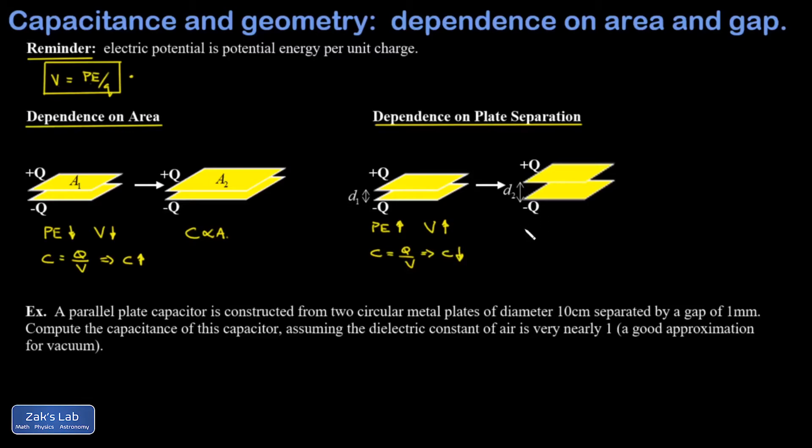And again nature behaves in this very simple way where it's actually an inverse proportionality. As d gets bigger, C gets smaller, but it's a perfect proportionality. So if d doubles, the capacitance would be cut in half. So what's the actual formula for capacitance as a function of plate area and plate separation? There's a constant in here and then I see my proportionalities that I've already justified.